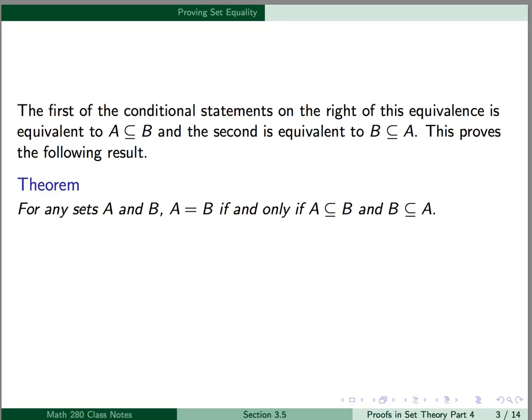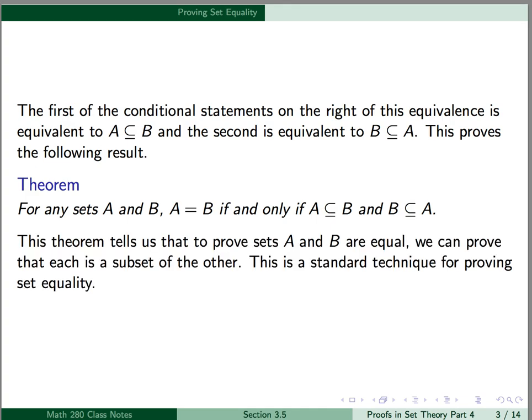This result proves the following theorem: for any sets A and B, A is equal to B if and only if A is a subset of B and B is a subset of A. This theorem tells us that to prove sets A and B are equal, we can prove that each is a subset of the other, and this is a standard technique for proving set equality.